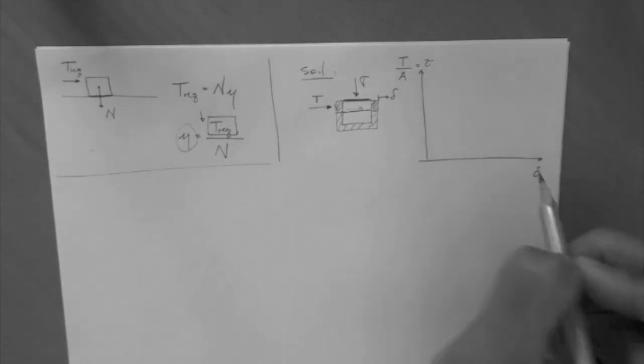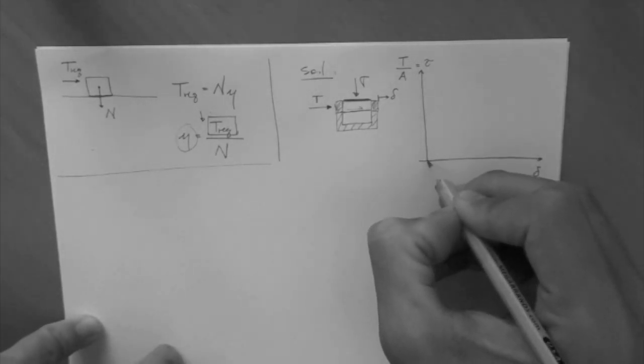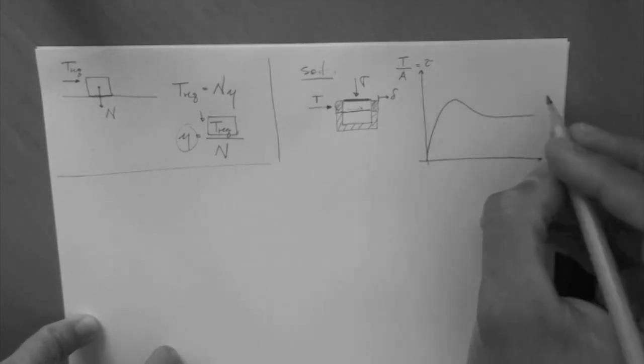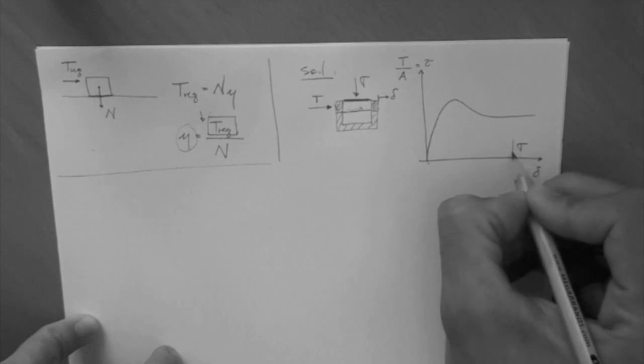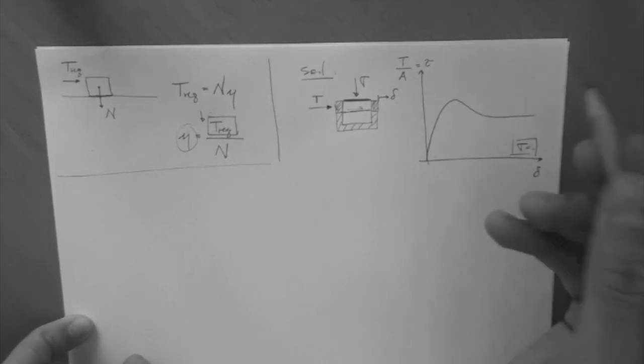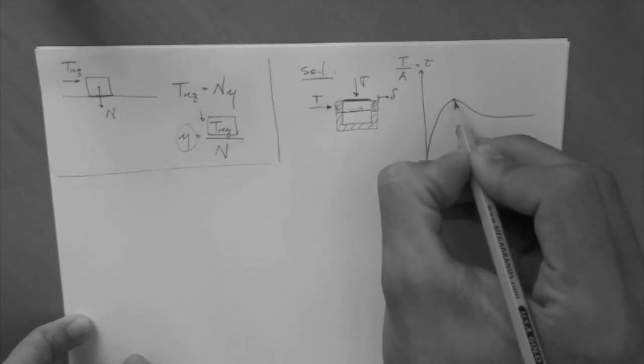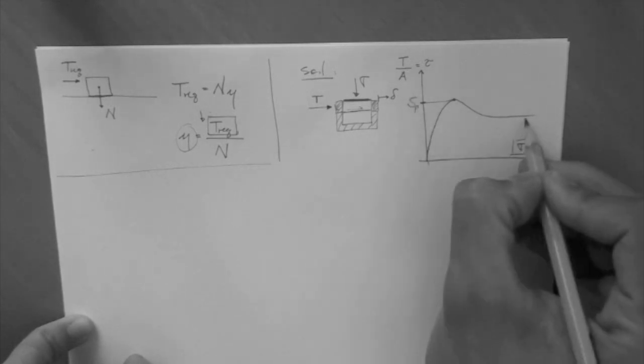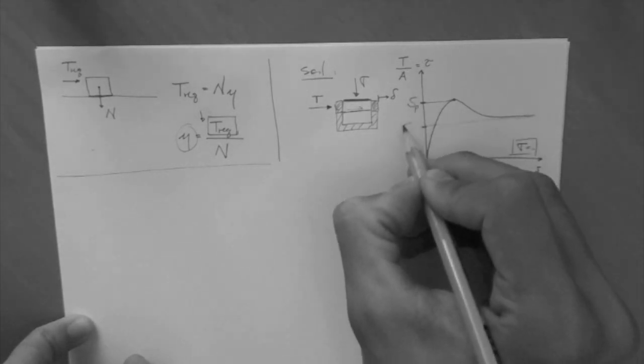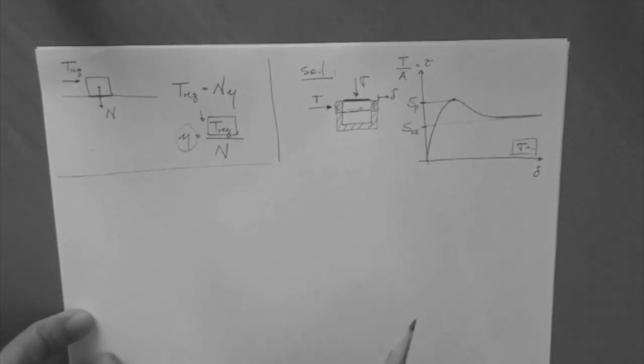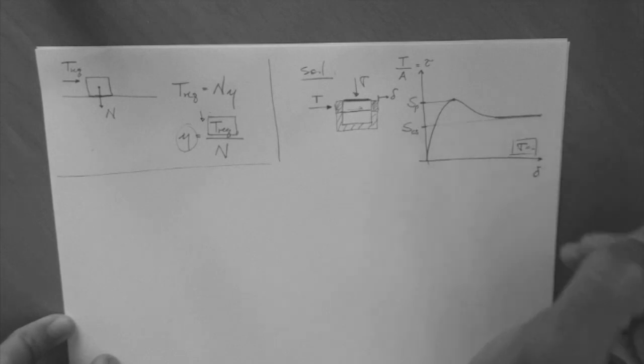So, if we plot tau versus delta, we may get a curve like that. This curve is associated with this sigma that we applied, which is equal to some value. We impose this sigma. And then we say that this right here is the strength at the peak, and this right here is the critical state strength, associated with this tapering or this flat portion here.